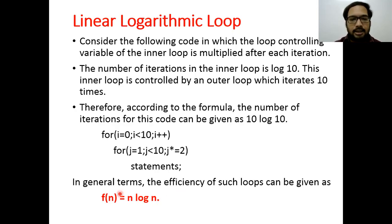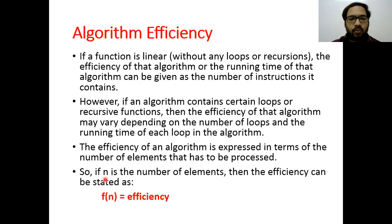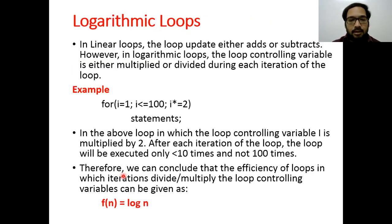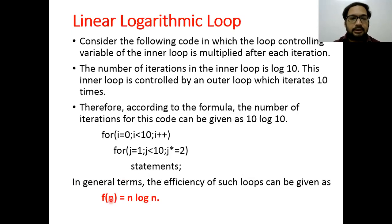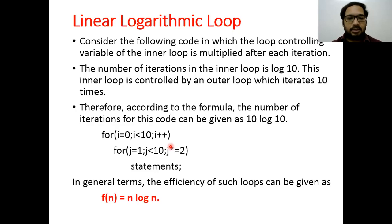So n is the number of elements, and the efficiency is stated as f(n). The efficiency varies based on the number and type of loops and how the loop variable is incremented or controlled. This is how the linear logarithmic loop efficiency is measured.